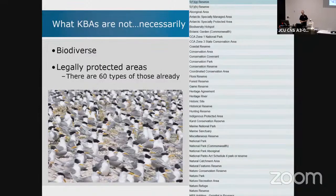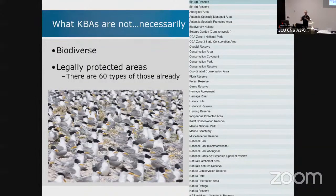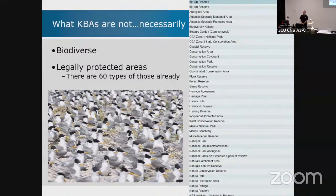Having a system independent of government protection legislation — where you say these are the places that matter — is actually helpful. It's also helpful when you're talking about places like the salt works in Dampier run by Rio Tinto, a fantastic place for migratory shorebirds. If you went in and declared it a protected area with no more actions, it would all fall in a heap — no one would be regulating the water levels perfectly for those birds. Similarly the Western treatment plant in Melbourne. It gives you an advantage not to have it tied to legal protection immediately.